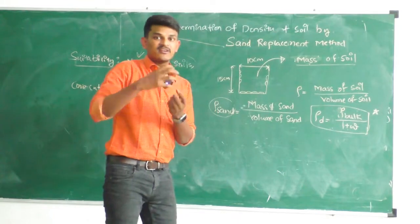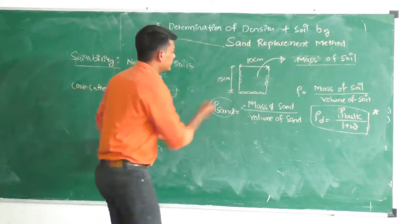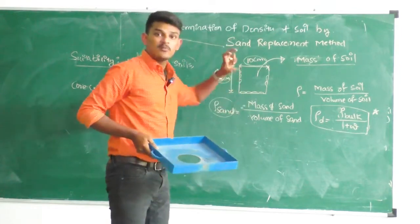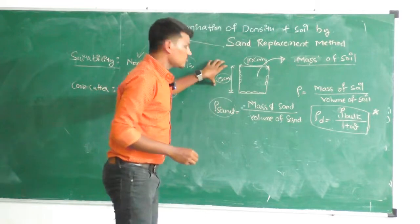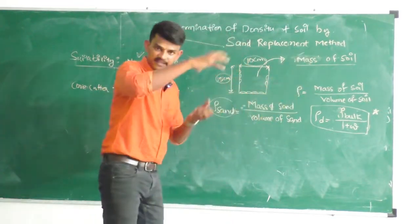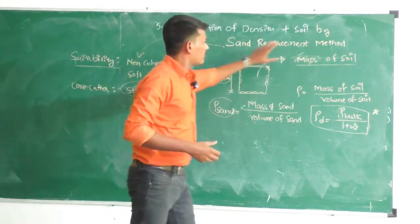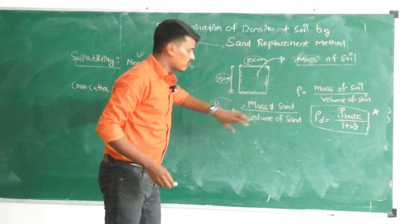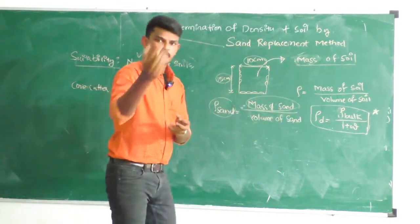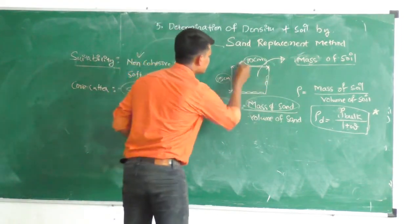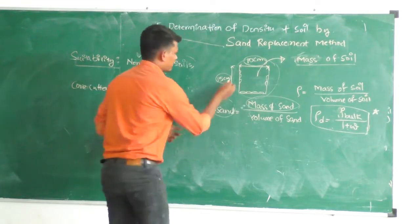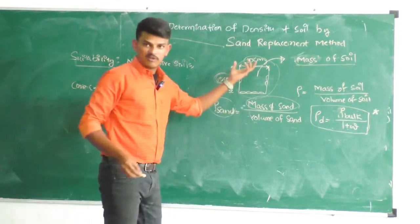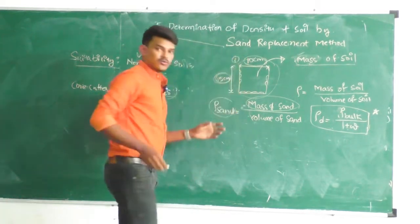We dig from the particular area up to 15 centimeters depth, and the diameter of the hole is 10 centimeters, giving us the volume. The mass of the soil coming out can be measured directly. However, you might think we can simply calculate volume using those dimensions — 15 cm depth and 10 cm diameter. But it is not as simple as that.